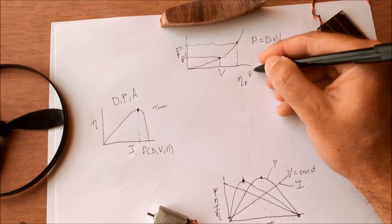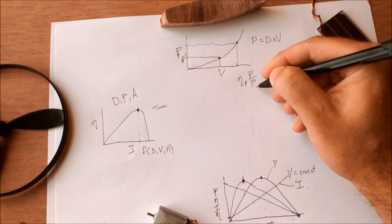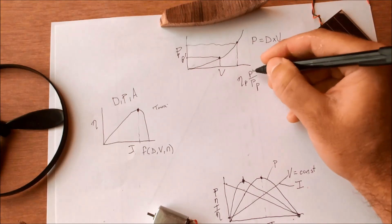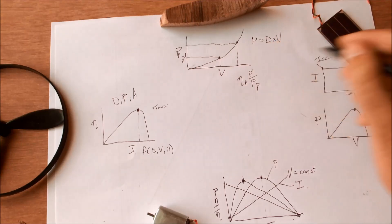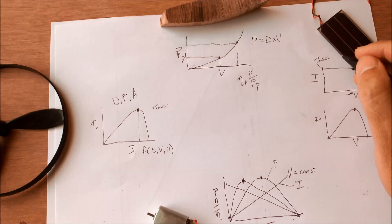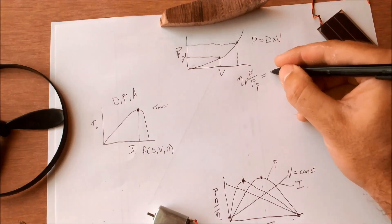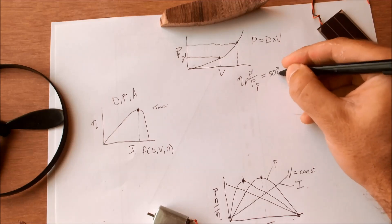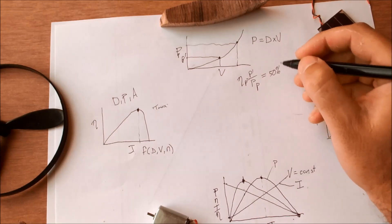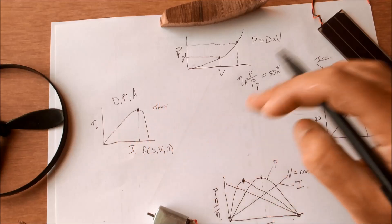And you can work out the overall propulsive efficiency by simply dividing the real power available from the panel power. And that would typically be in the order of 50%.